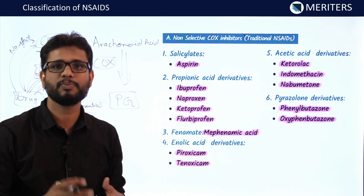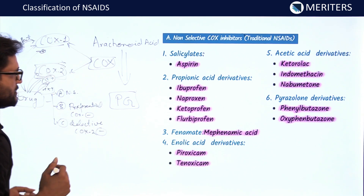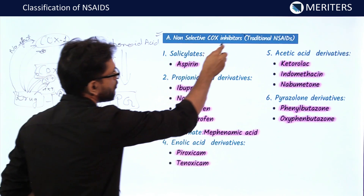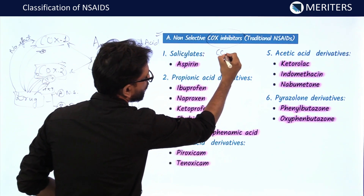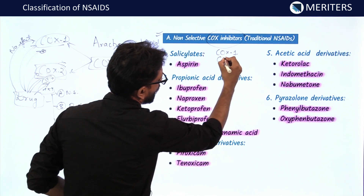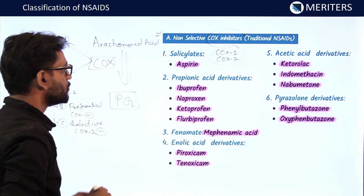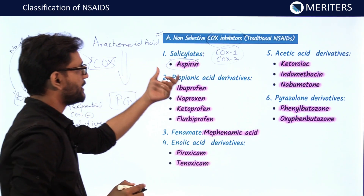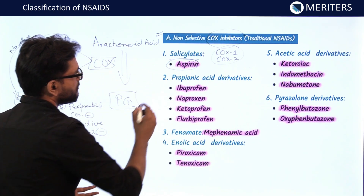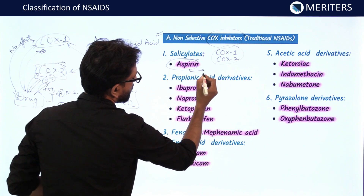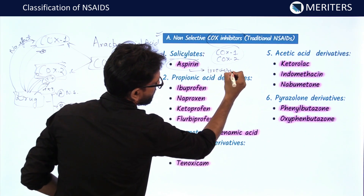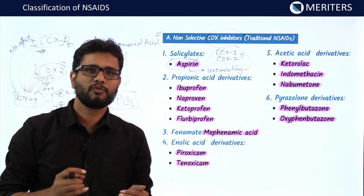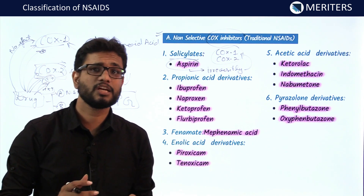We'll deal with the classification of these drugs based on which enzyme they inhibit and how preferential they are. The first category is the non-selective COX inhibitors, which inhibit both COX-1 and COX-2 equally. First we have the salicylates — aspirin is the prototype of this category, representing the traditional NSAIDs. Aspirin irreversibly inhibits these COX enzymes.